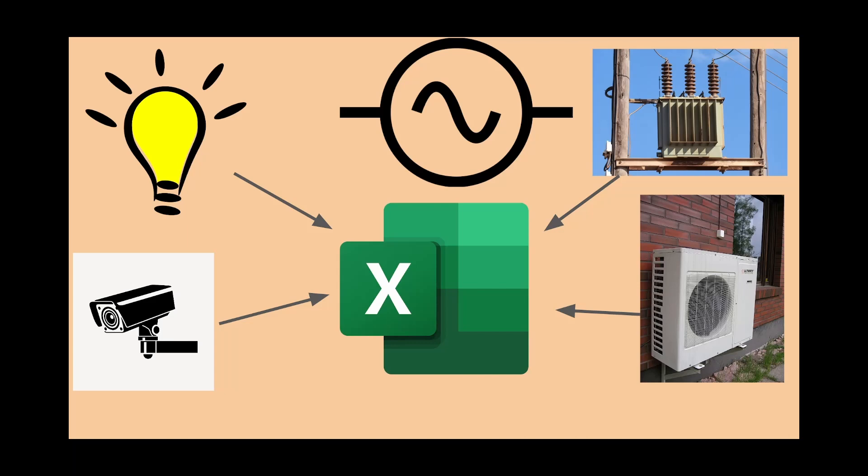Station auxiliary loads include HVAC, lighting, security, pumps, fans, motors, and DC system charging.